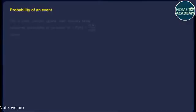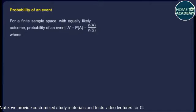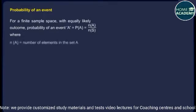Probability of an event. For a finite sample space with equally likely outcomes, probability of an event A is equal to P(A) = N(A) / N(S), where N(A) is the number of elements in the set A and N(S) is the number of elements in the set S.